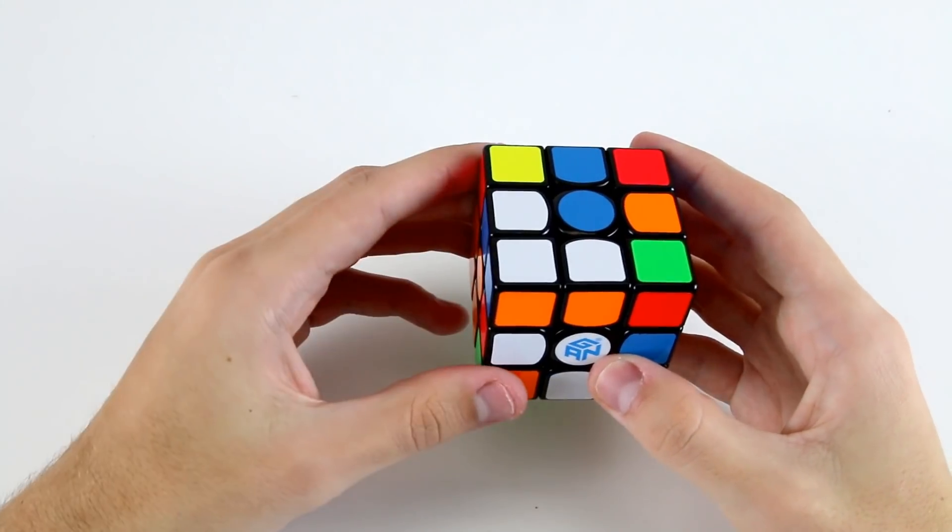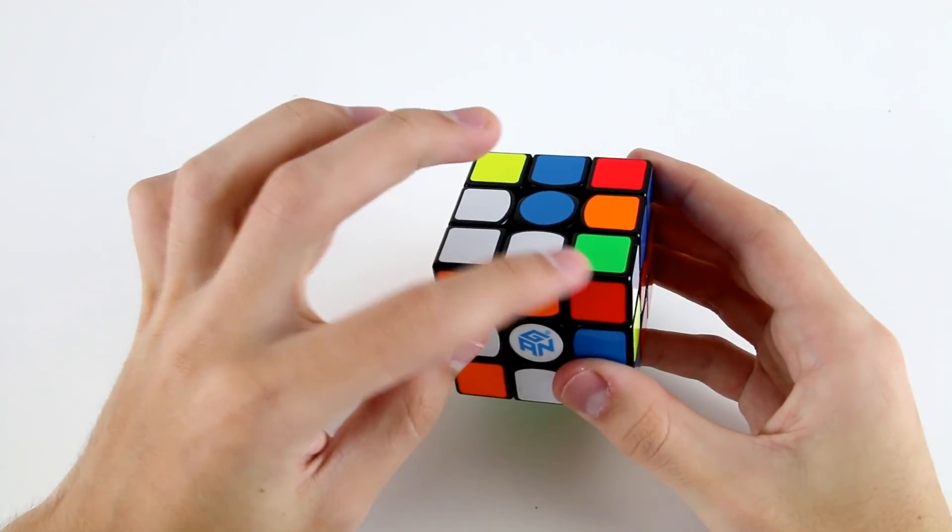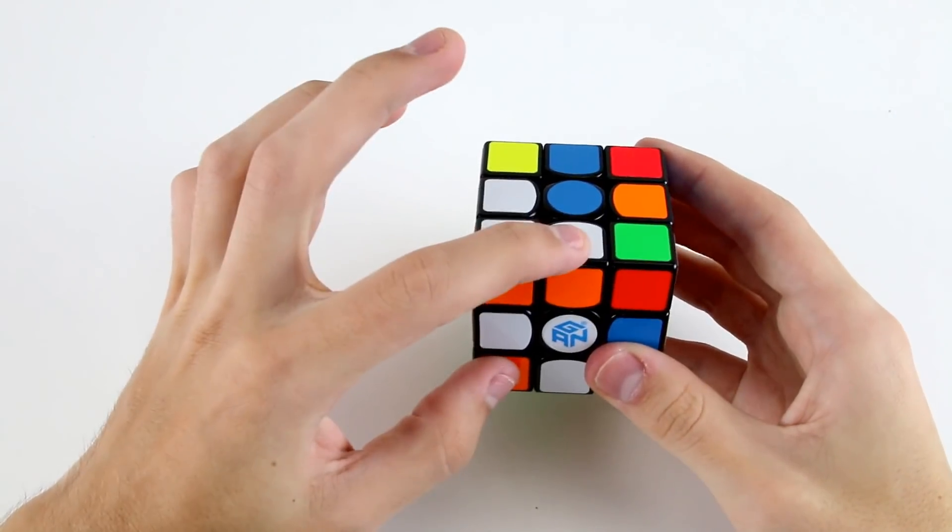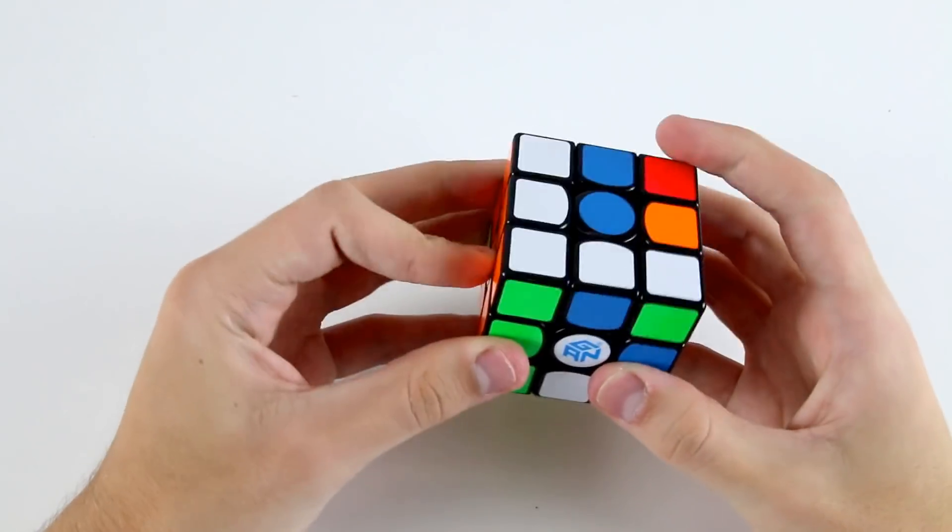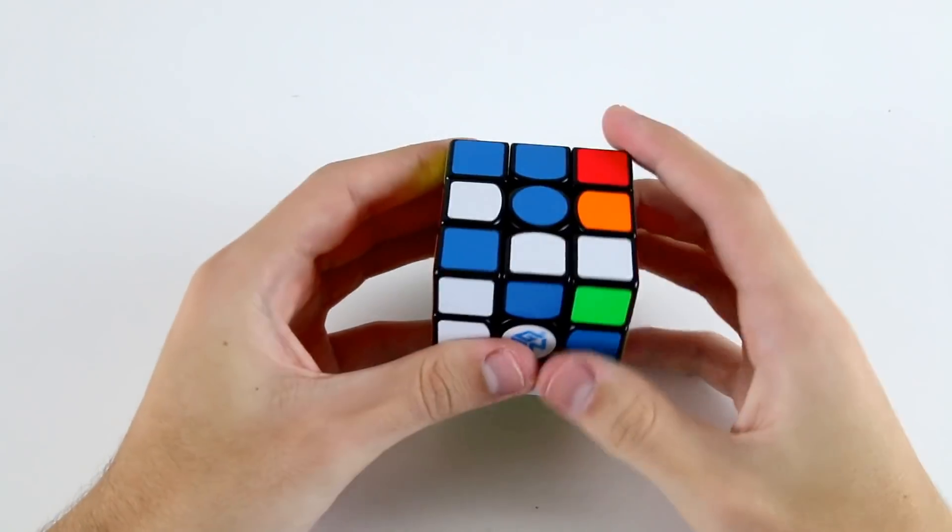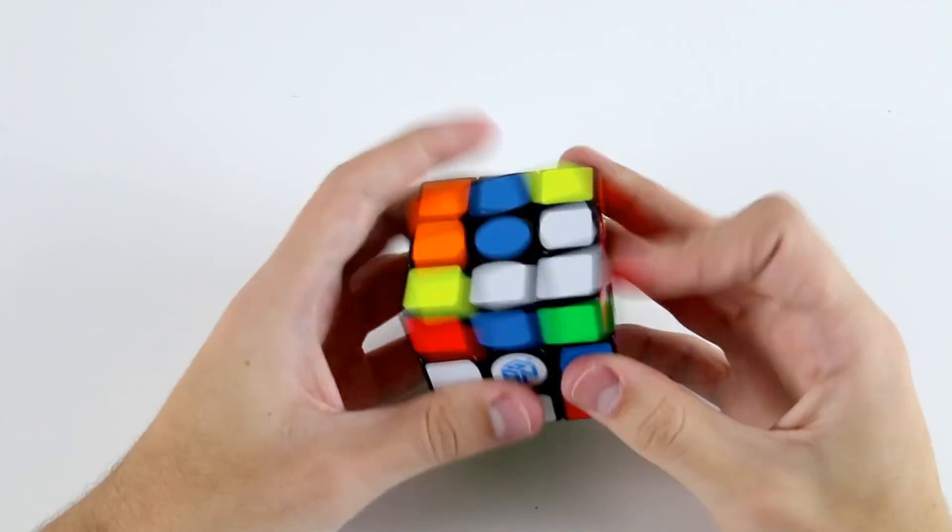Now I've got a couple of different options. I can either go for this F2L pair which is a little bit tricky to finger trick or I can do these two into this front left slot which I would probably do like that. Then I've got this easy F2L case for my last pair.